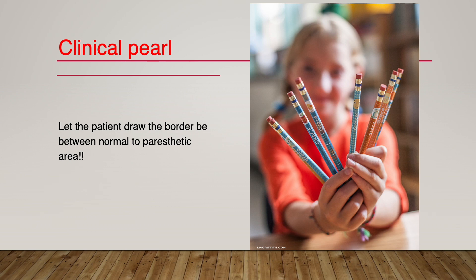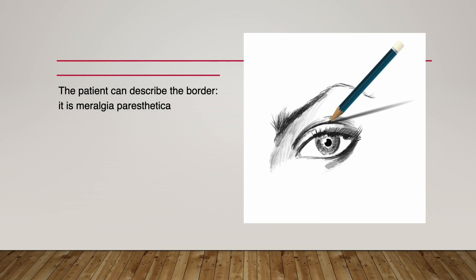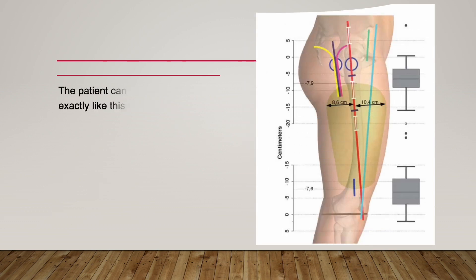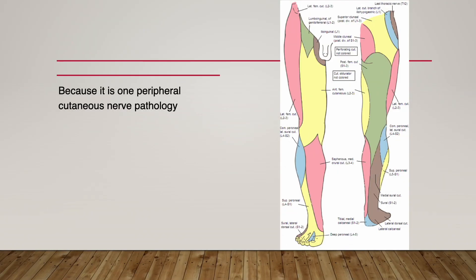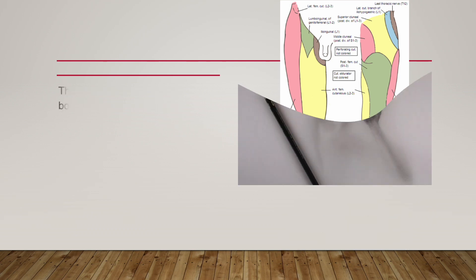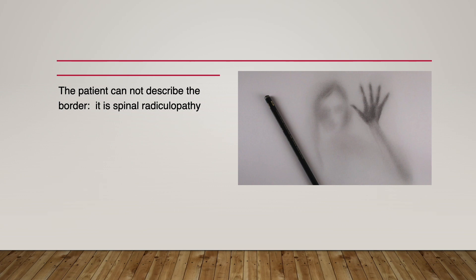If the patient complains of abnormal sensation or pain in the outer thigh, let them draw the border between the normal and paresthetic area with a pencil. If the patient can confidently draw the border clearly, it is meralgia paresthetica — no patient with spinal radiculopathy can describe the border exactly like the illustration. That is why the cutaneous nerve is very discriminative and precise in localizing pain areas compared to the sensory nerve of the tendon and deep structures. If the patient cannot describe the border and points ambiguously, it is spinal radiculopathy.